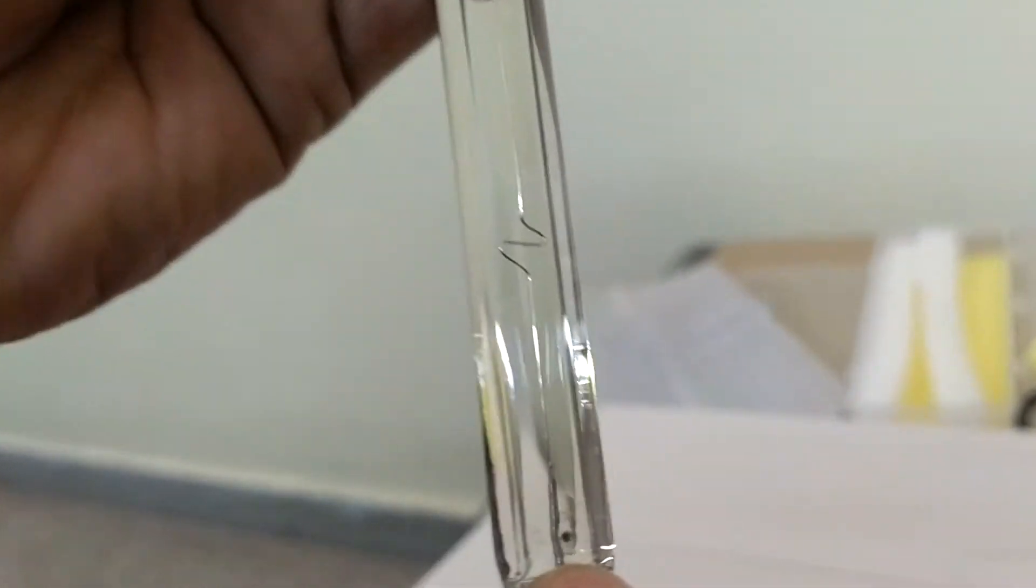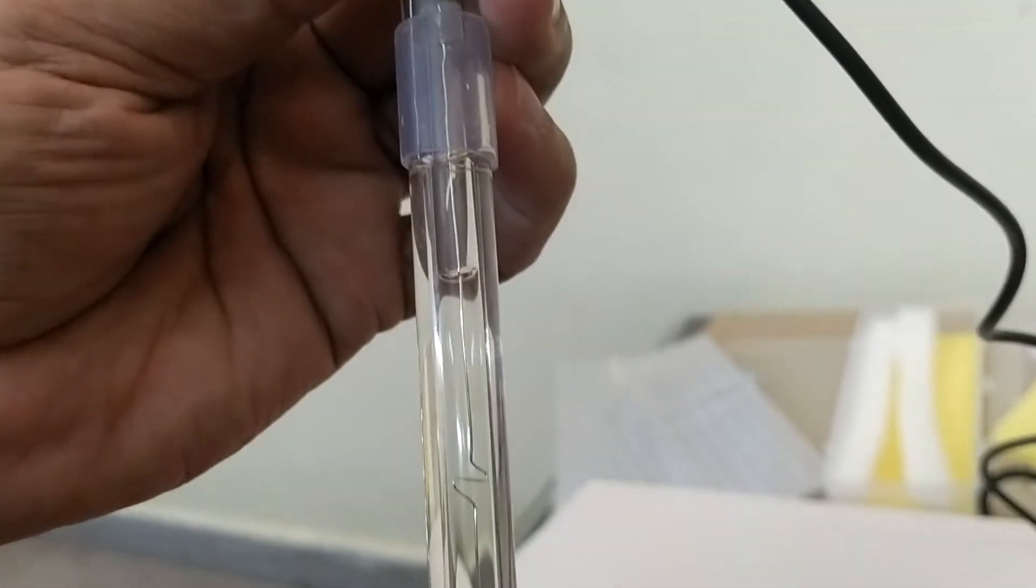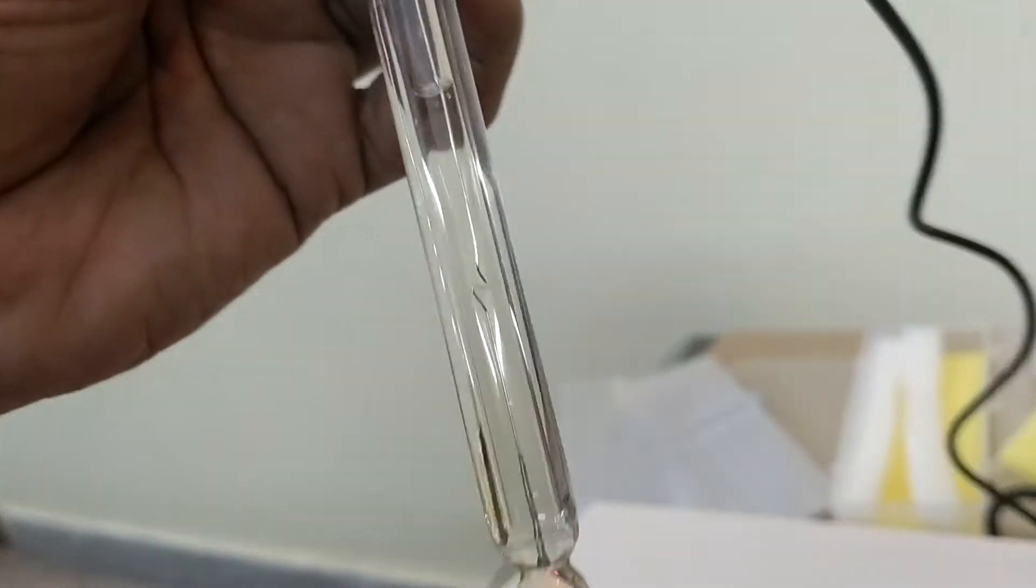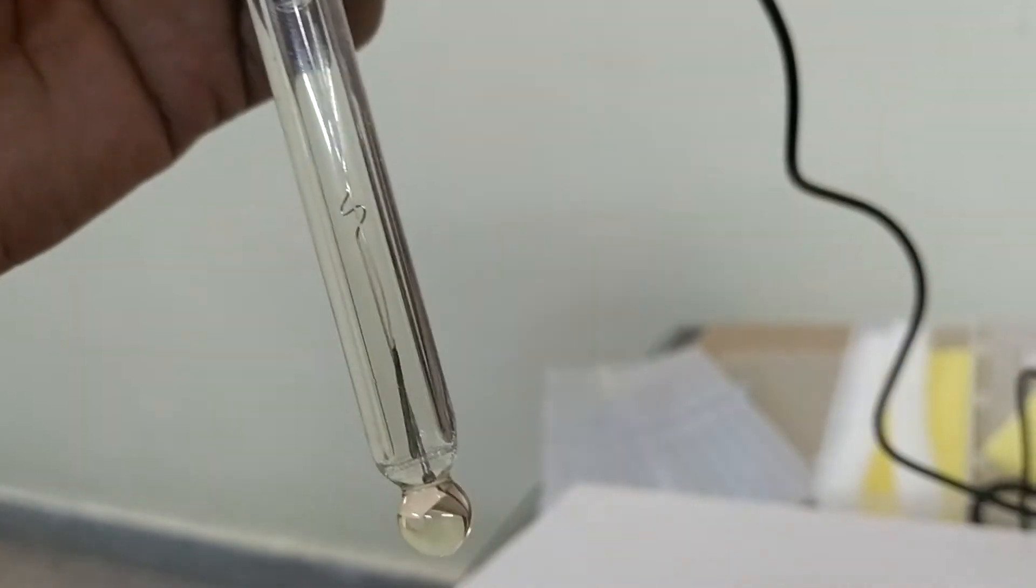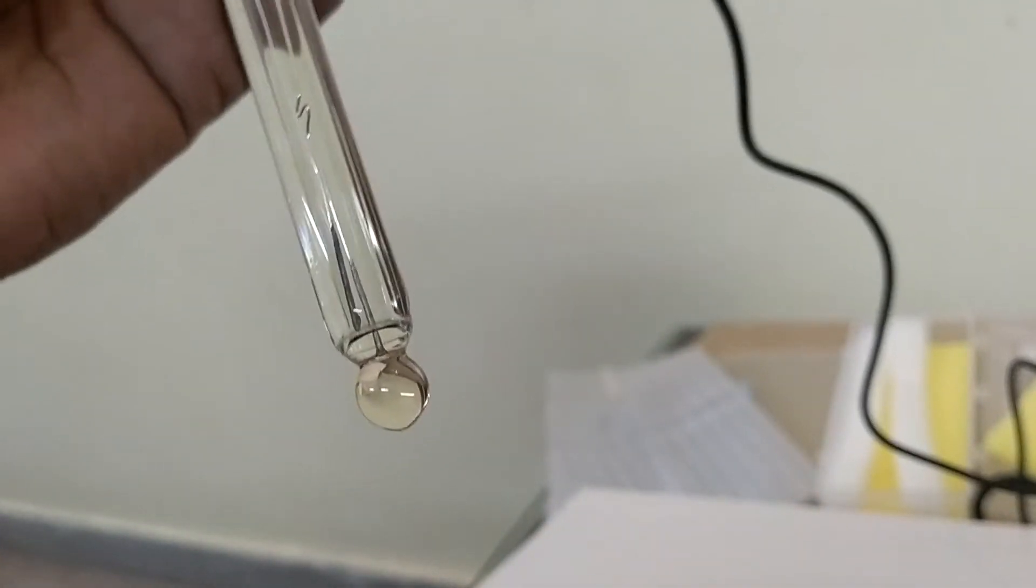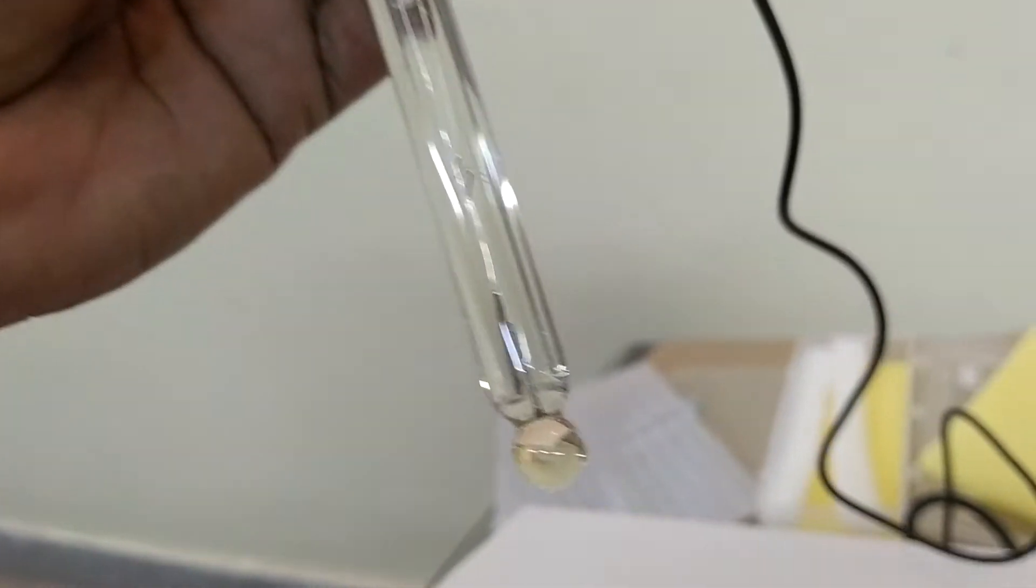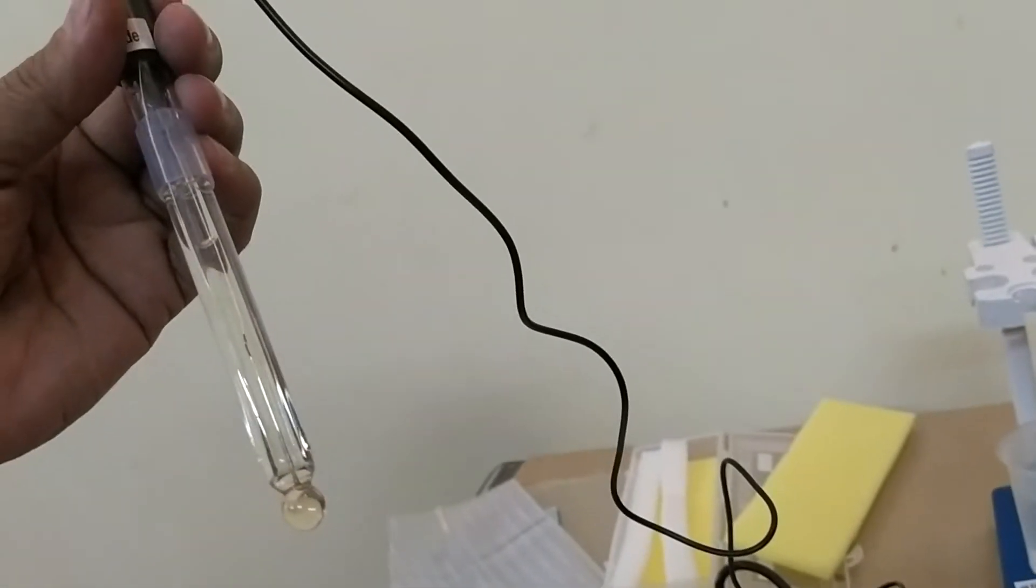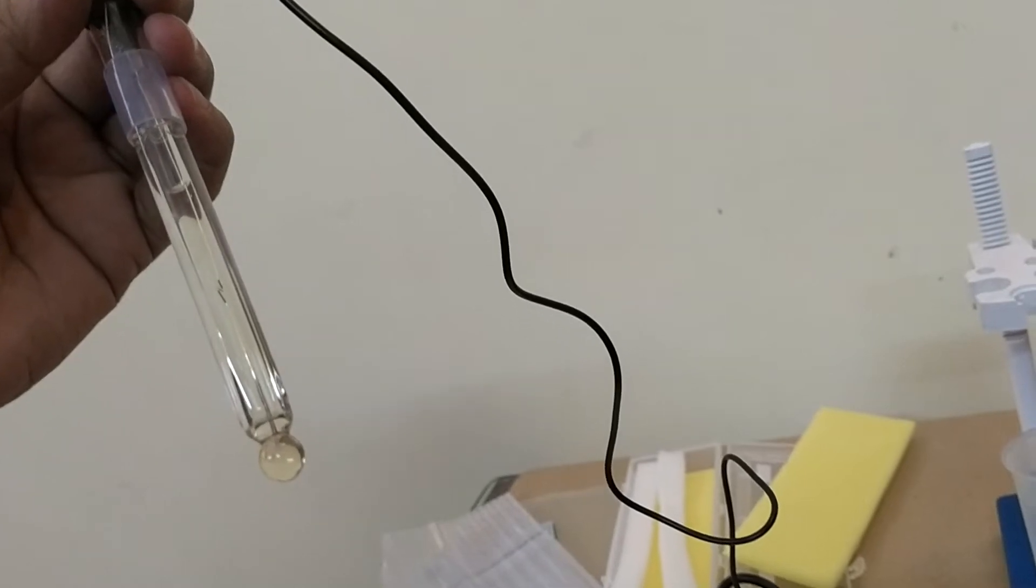In the pH electrode this is the main sensor. If this gets chalk, then pH electrode is dead. Always maintain 100% flow. When internal saturated KCL links with the outer solution, there is electric potential created that sends to Auto Digital pH meter.